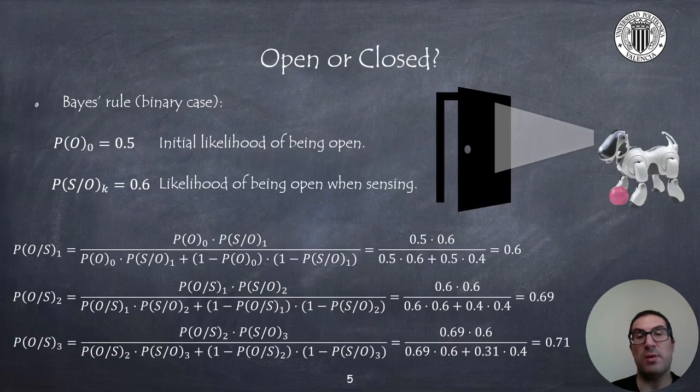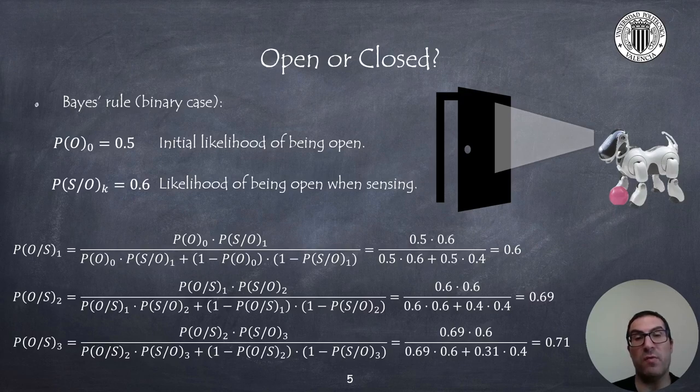Let's see a simple example that will help us understand the application of Bayes' rule in case of detecting whether a door is open or closed. Suppose the robot detects a door with a vision sensor, and after some image processing, the vision sensor provides a 60 percent chance of detecting that the door is open. The initial probability that the door is open or closed is 50 percent, which represents that our initial knowledge is null.